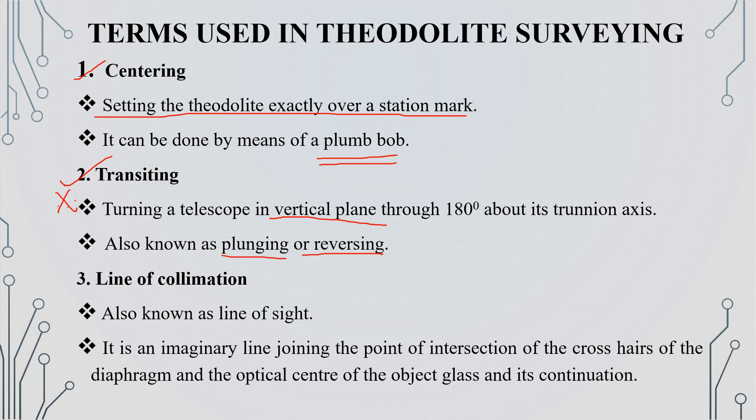The second term is the line of collimation, also called the line of sight. It is the imaginary line joining the point of intersection of the crosshair on the diaphragm and the optical center of the object glass and its continuation. It is called the line of collimation.